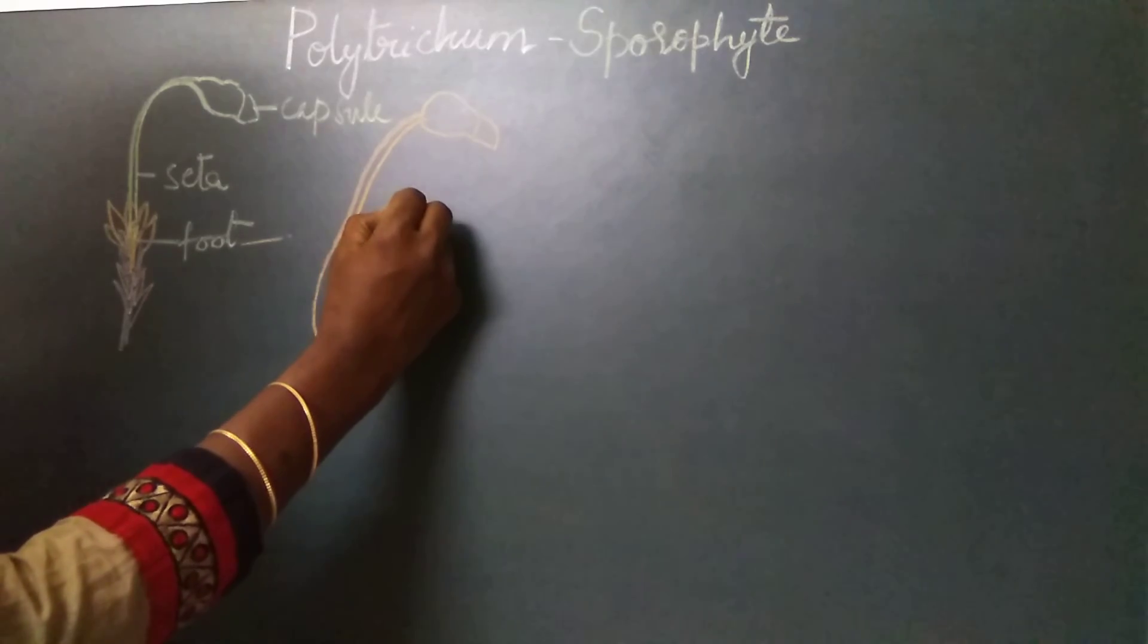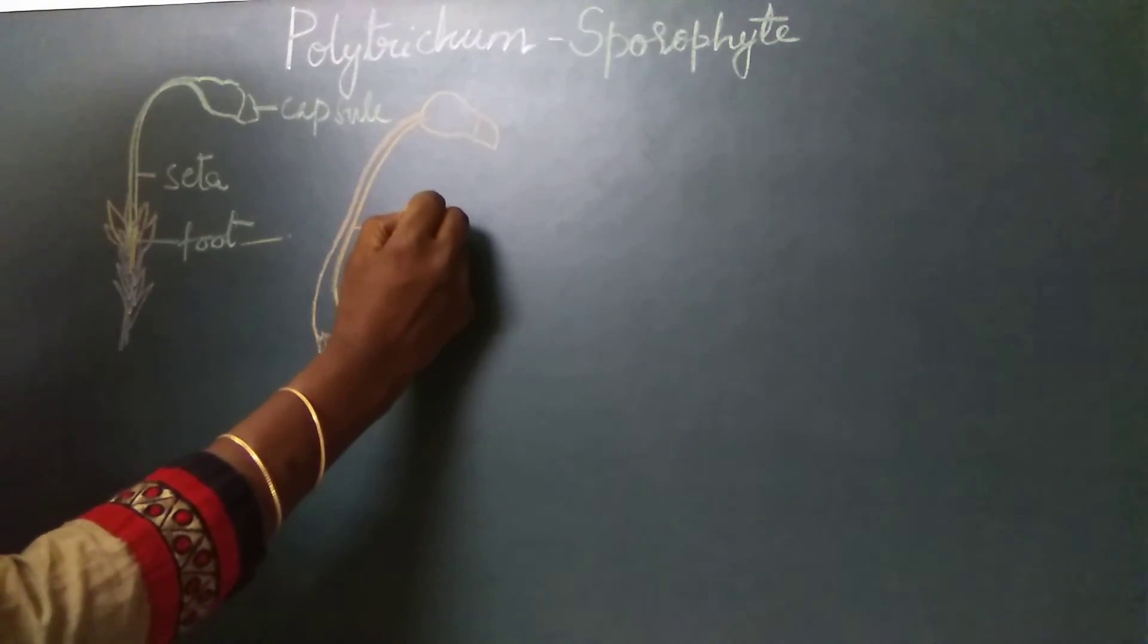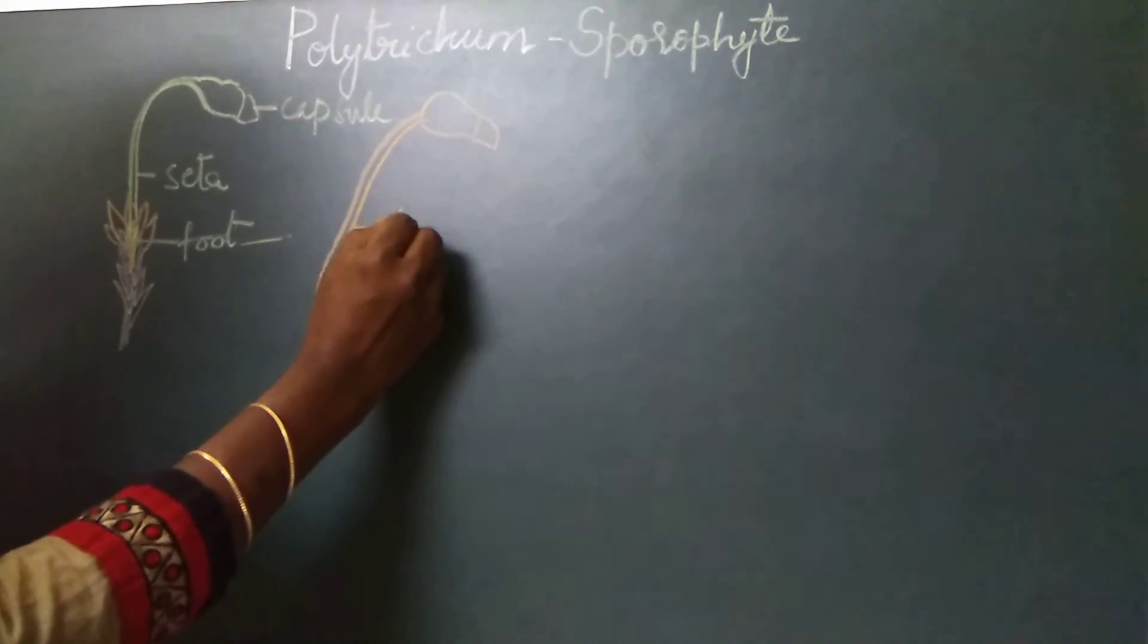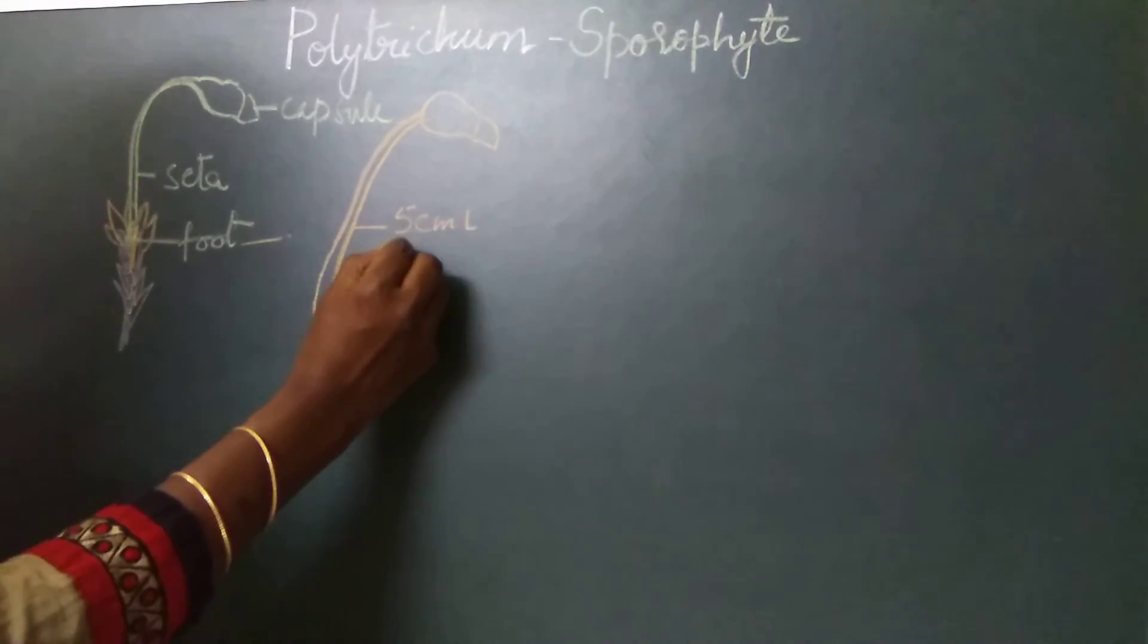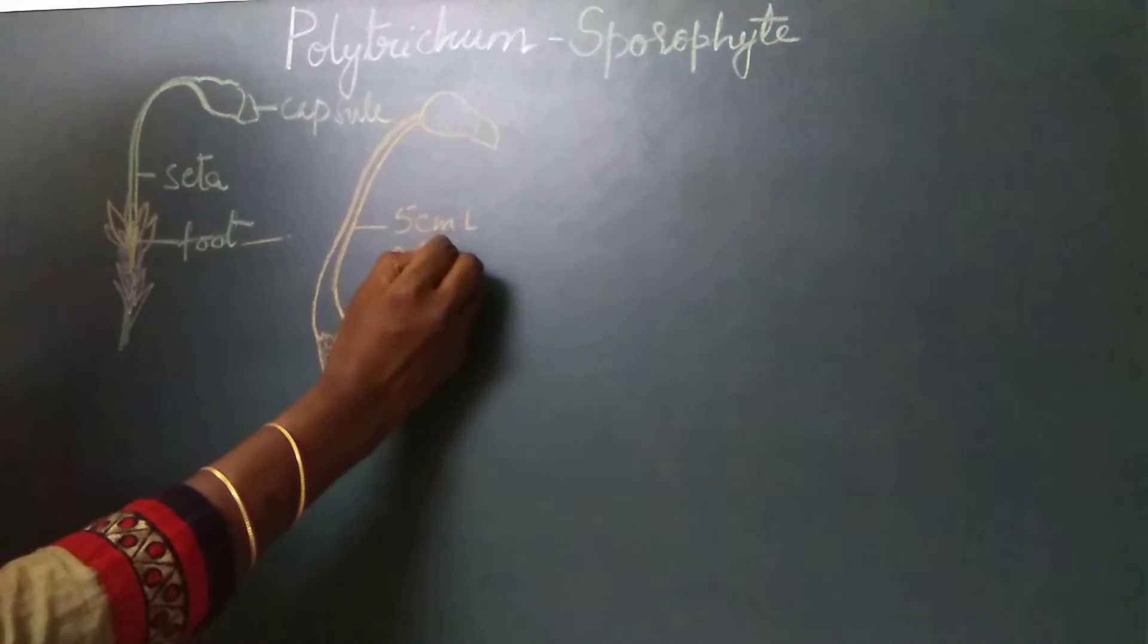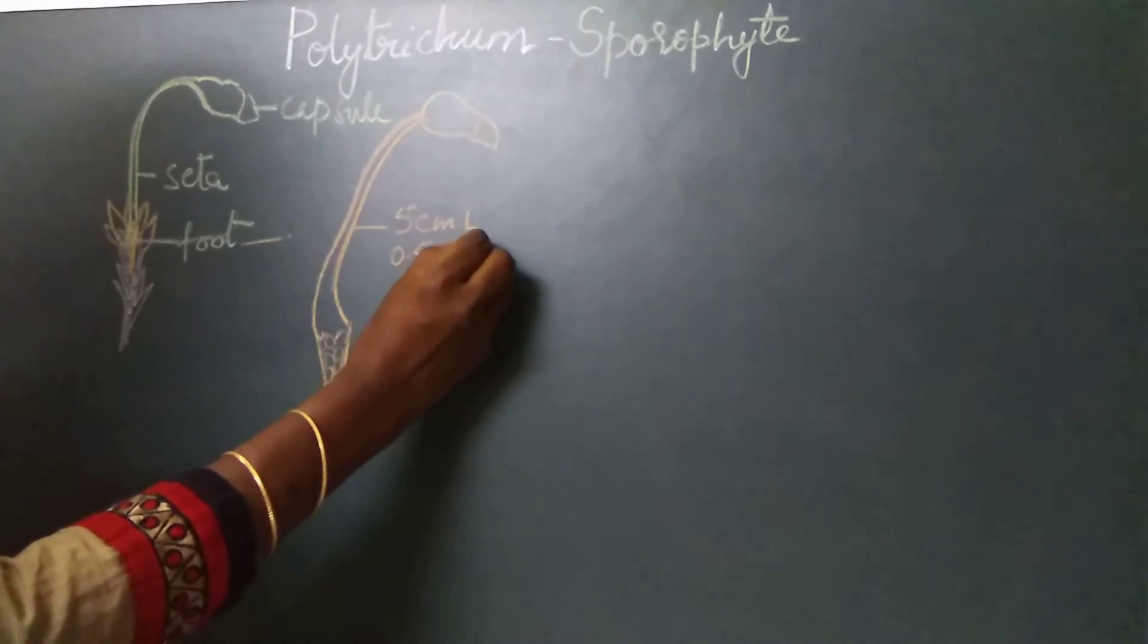For example, in Polytrichum commune, the seta is around 5 centimeters in length and about 0.5 millimeters in diameter.